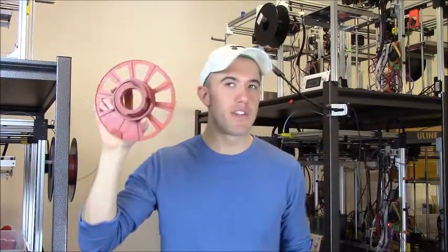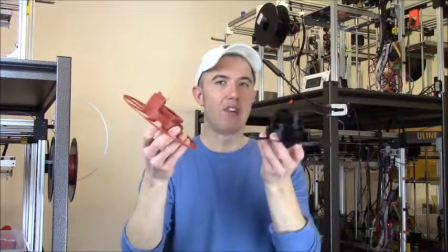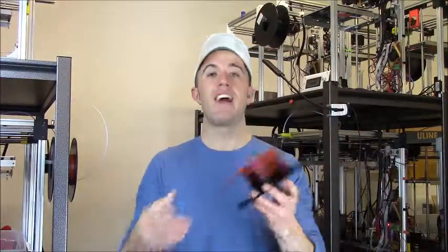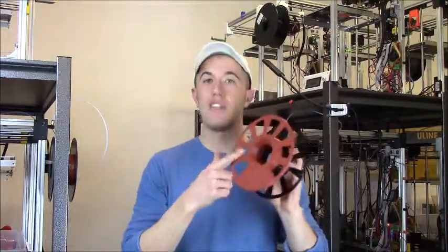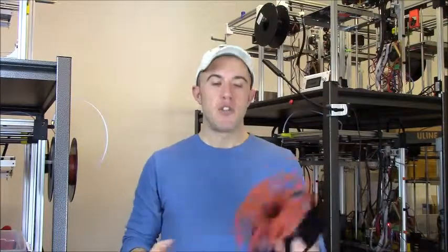We also designed it so that the two halves are the same part. You just print this part twice, and you've got a slant spool. That is terribly useful to us because we only have to keep one part in inventory. If one of these breaks, we pull off that one half and grab another half and stick it on. There's no inventory hassle that goes along with it.